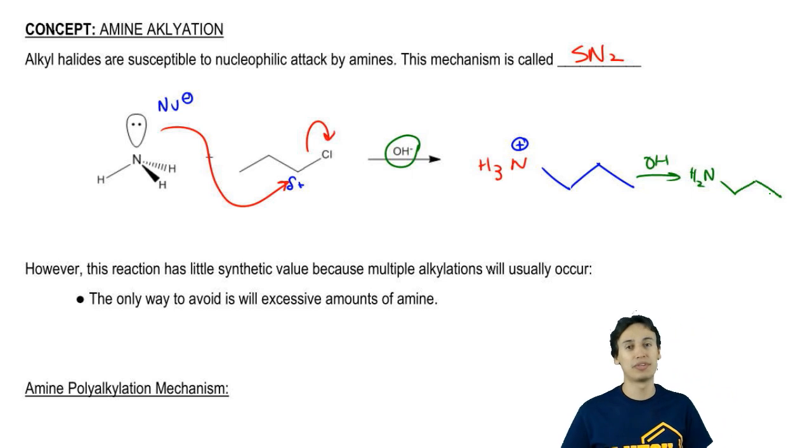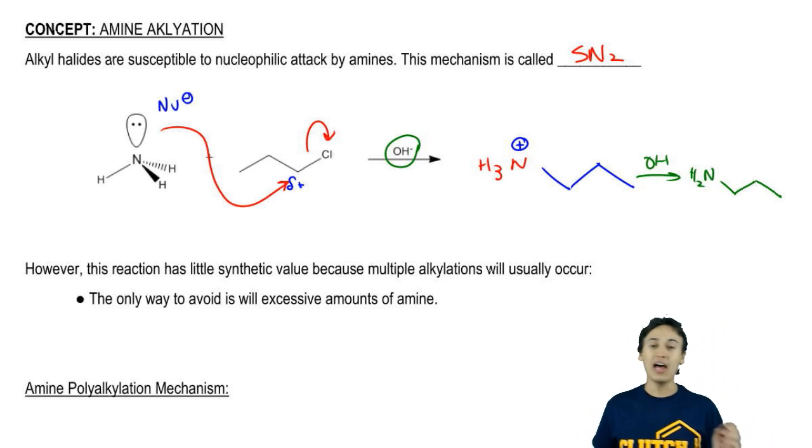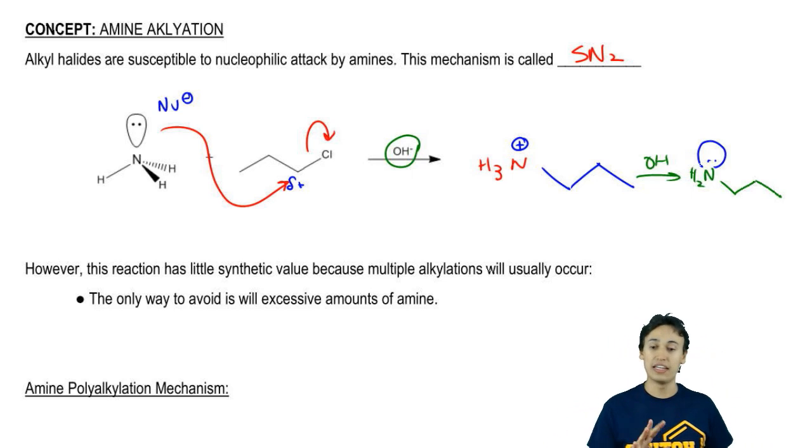But we've got another problem on top of that. It's not just that SN2 has its limitations. One of the biggest problems with this reaction is that we still have a nucleophilic lone pair at the end of the reaction. Notice that your product is just as nucleophilic as it was at the beginning.